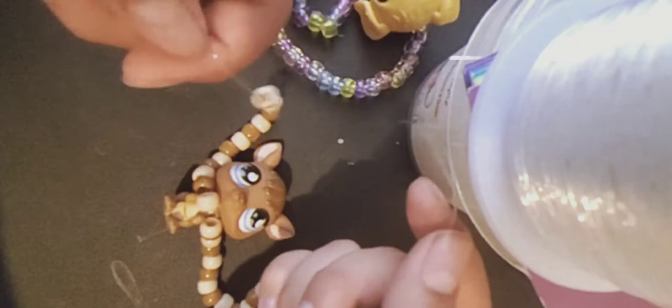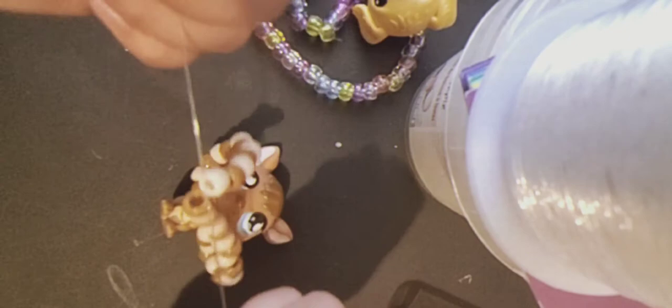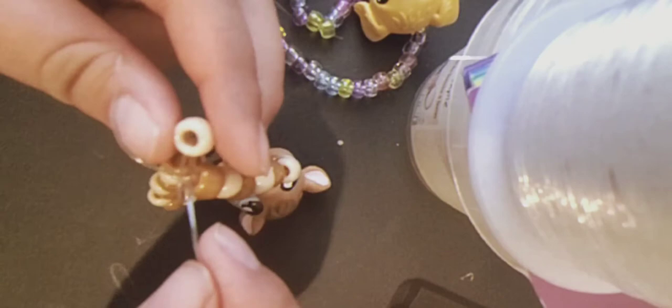So to tie it off, you're going to make a knot. You see my two strings, I'm going to cross them over as if I were to tie my shoelace. Grab one, tighten it, and then you're going to do that again. You're going to go over, grab it from the other side, and knot it.